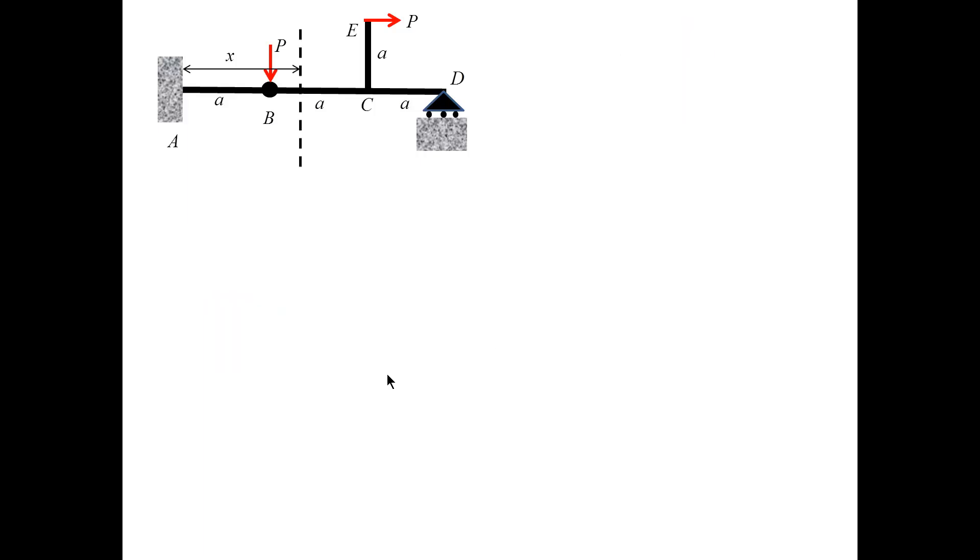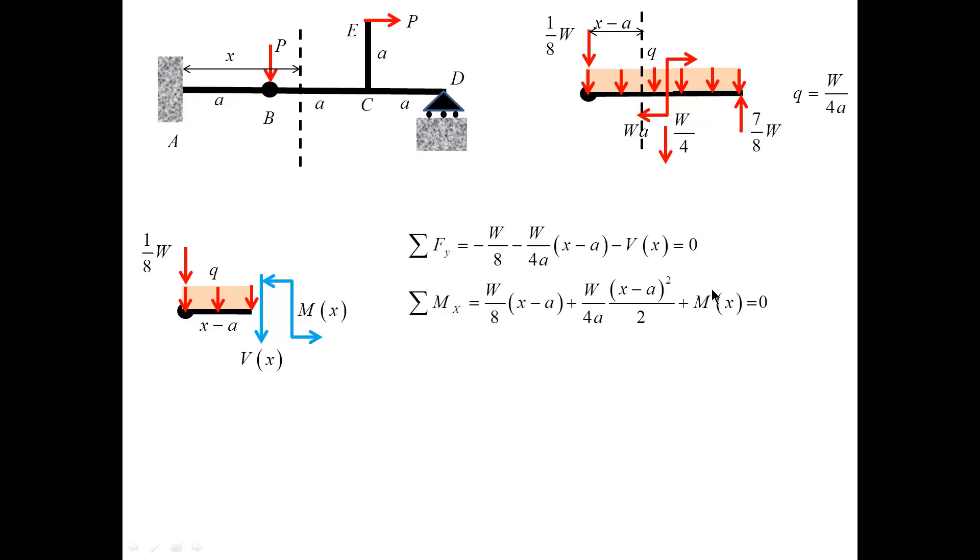Next, I make a cut for x between b and c. In this case, I will look at the segment b, c, d, total segment, and I'll be cutting within the segment, so that the length from b to the cut is x minus a. Once the cut is introduced, the free-body diagram for v of x and m of x looks like this. The corresponding equilibrium equations give me the shear force and bending moment equations.